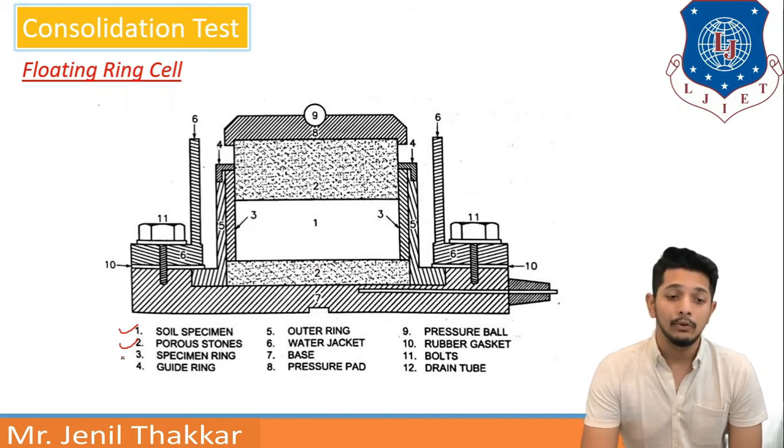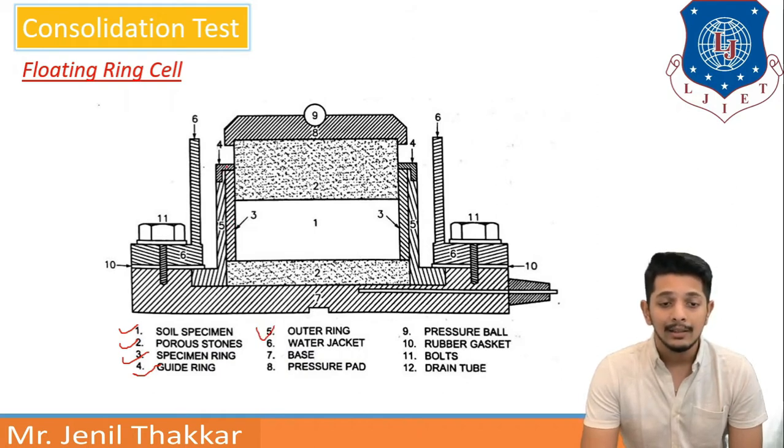And there are three types of rings kept, specimen ring, guide ring and outer ring. We can see rings here, specimen ring, guide ring which is guiding only and fifth one is outer ring.